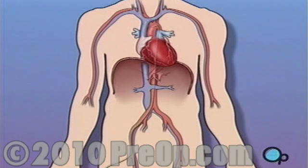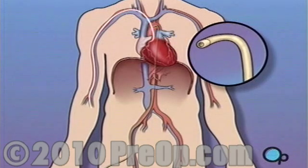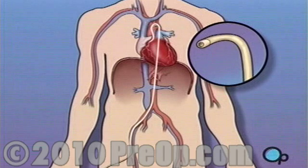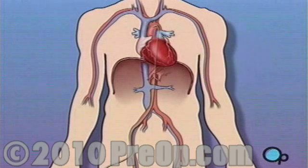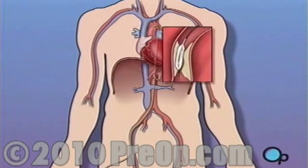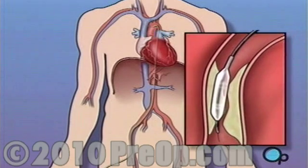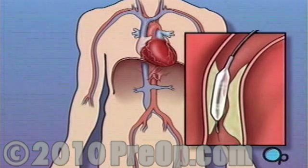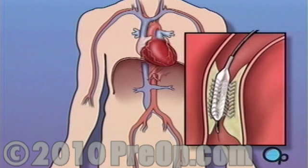During a balloon angioplasty, a heart specialist will insert a thin tube into the artery in your arm or leg and gently guide it towards the problem area in your heart. Once the tube is in place, a small balloon is briefly inflated in order to widen the narrowed artery. A short length of mesh tubing, called a stent, is then inserted into the newly widened artery.